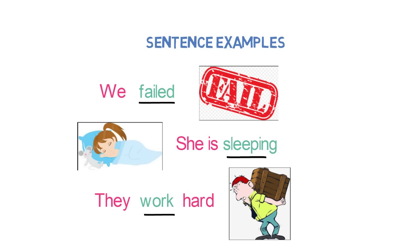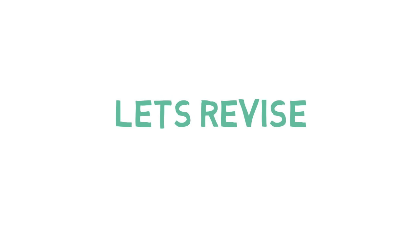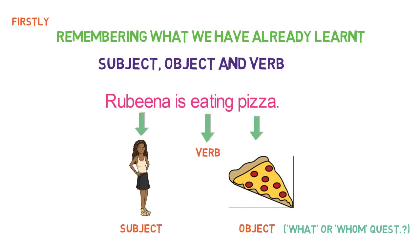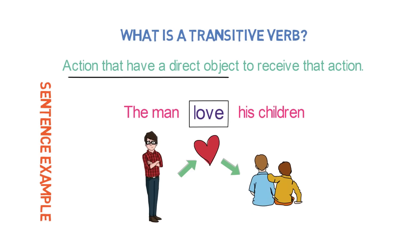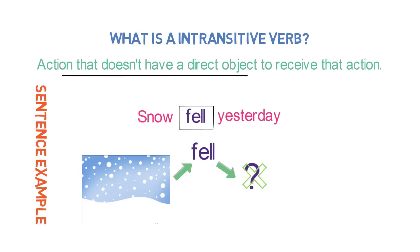That's all about transitive and intransitive verbs. Let's quickly revise what we have learnt in this video. Firstly, we discussed subject, object, and verb with the help of an example. Then we discussed transitive verb — it is an action verb with a direct object. Finally, we discussed intransitive verb — it is an action verb without any direct object.